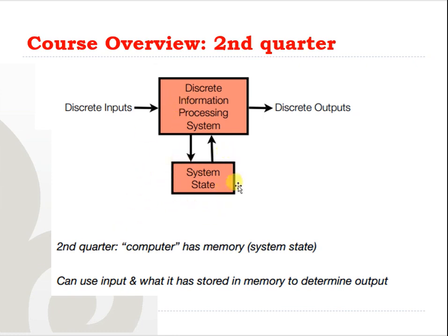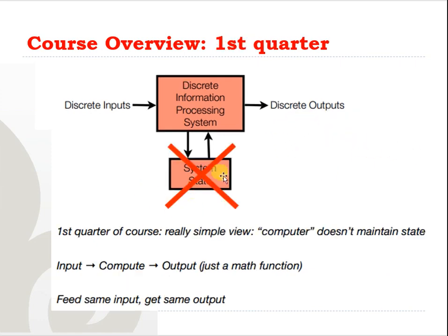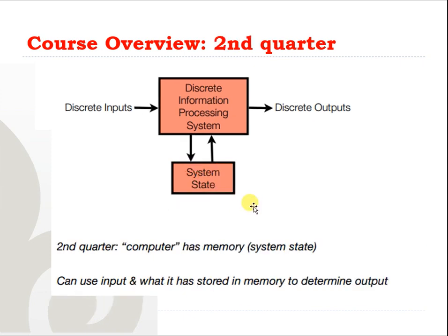Then in the second quarter we will consider the system state — we'll assume that the system state is also present. In this case the computer has some form of memory. Now if you apply the same input, depending on the state of the system you may get different outputs. We can use the input and what has been stored in memory to determine the output, so what has happened in the past will also be taken into account. It will not be as simple as the stateless case.